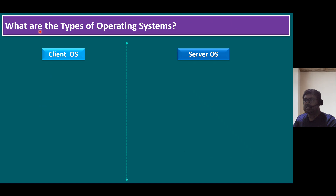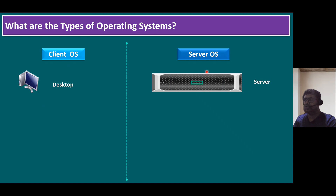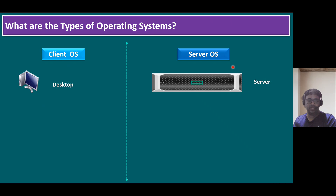Even within operating systems, there are two types: client operating system and server operating system. The client OS runs on a desktop or workstation, while the server OS runs on a server — which can be a tower server, rack mount server, or blade server. Most organizations today are already virtualized. They may run Windows Server directly on hardware and configure Hyper-V, or run Red Hat with KVM, or run VMware ESXi on the server and then create virtual machines running Windows and Linux as guest OS.